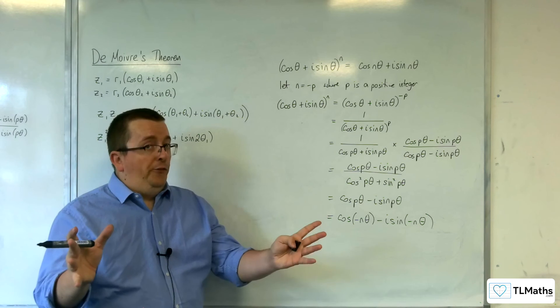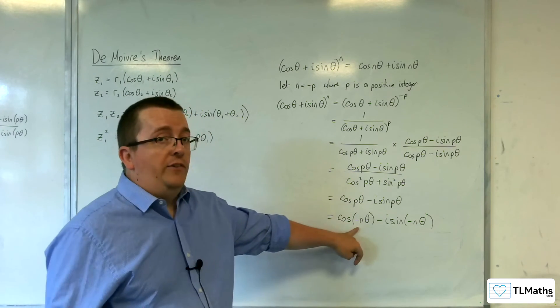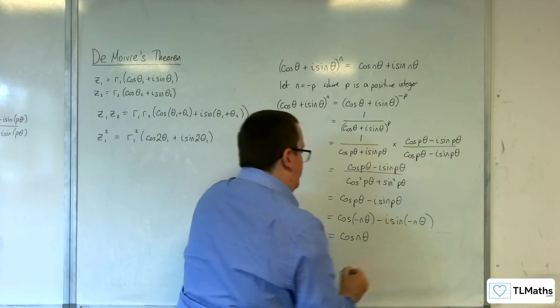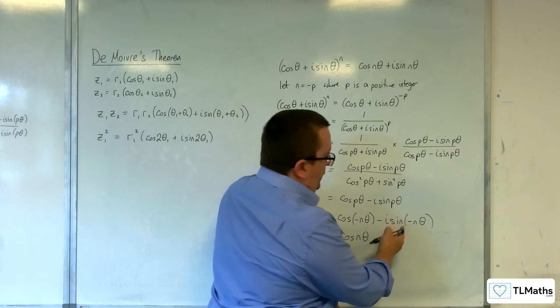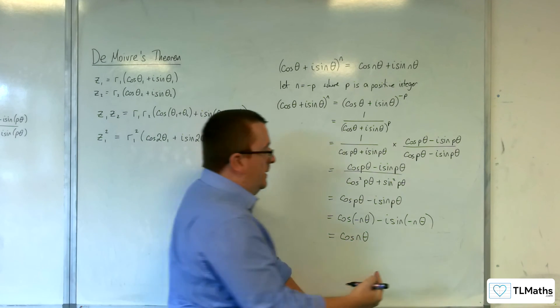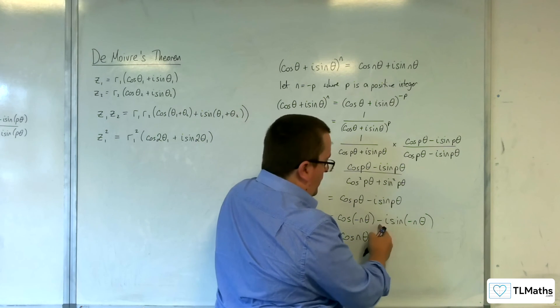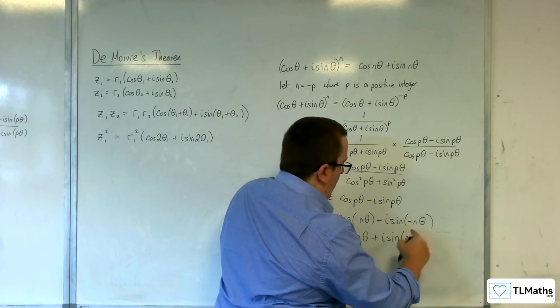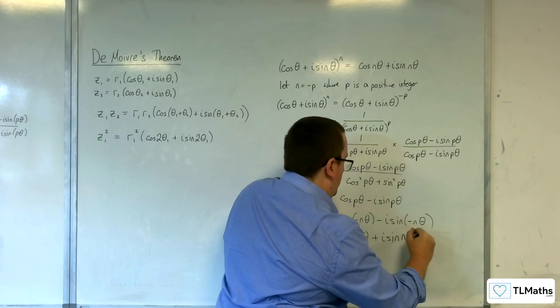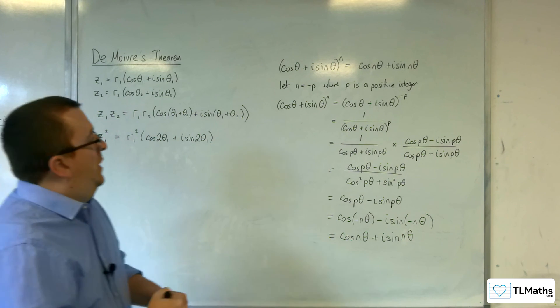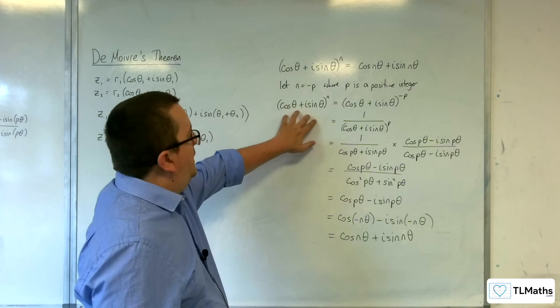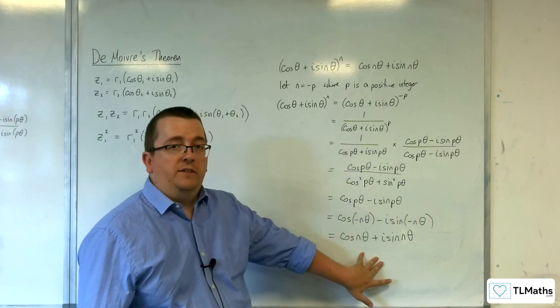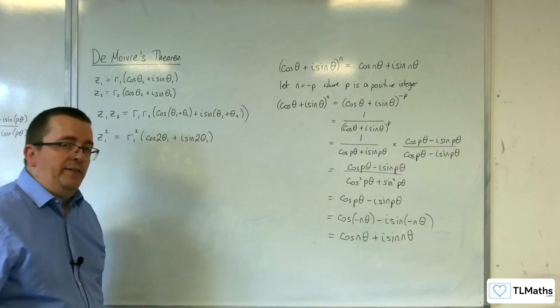But, cosine is an even function. So cosine of minus N theta is the same thing as cosine of N theta. And sine is an odd function. So that minus sine can come out and multiply with that minus sine, and you'll get plus i sine of N theta. And so, cosine of N theta plus i sine of N theta to the N is the same as cosine of N theta plus i sine N theta, where N is a negative integer.